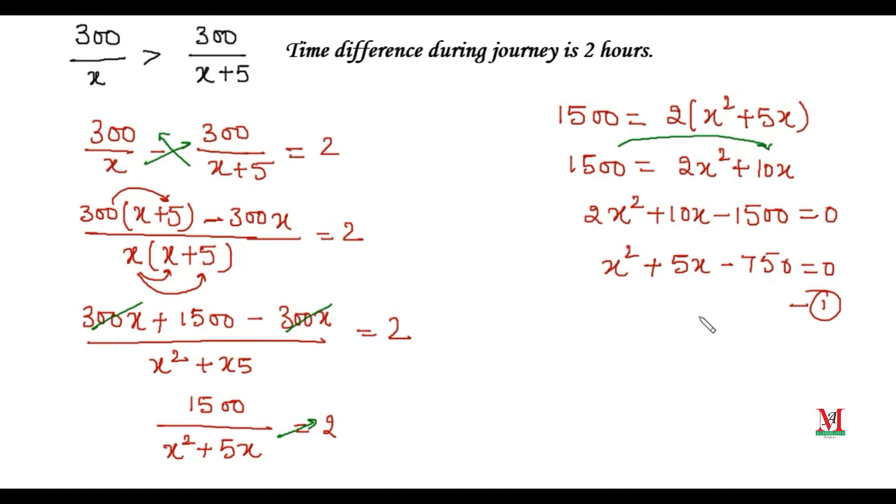To solve the equation, first identify the coefficients: the value of a, the coefficient of x², is 1; the value of b, the coefficient of x, is 5; and the constant term c is -750.